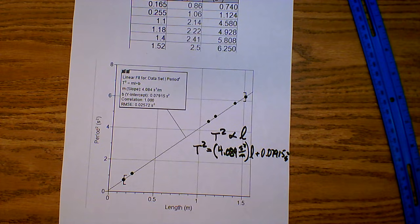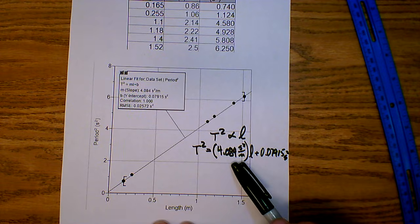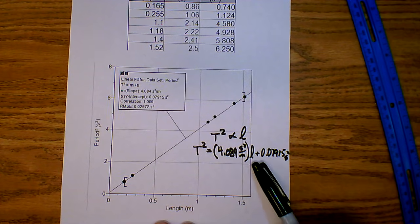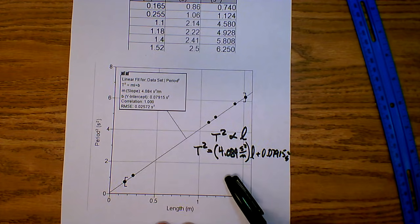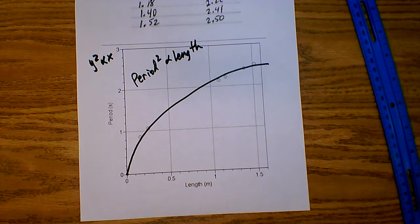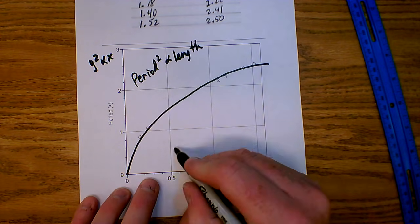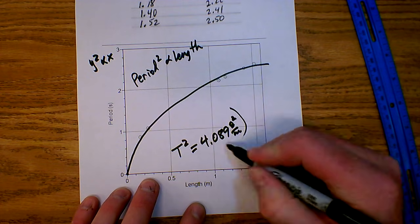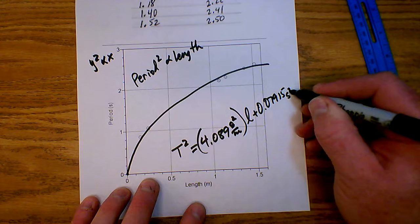Once it's linear, I know the relationship, I know the slope and the intercept, and I can find the equation. This equation — T squared equals 4.089 s²/m times length plus 0.07915 s² — is the equation of the line, and it is also the equation of the side-opening parabola. I have found the equation of the side-opening parabola by linearizing the data.